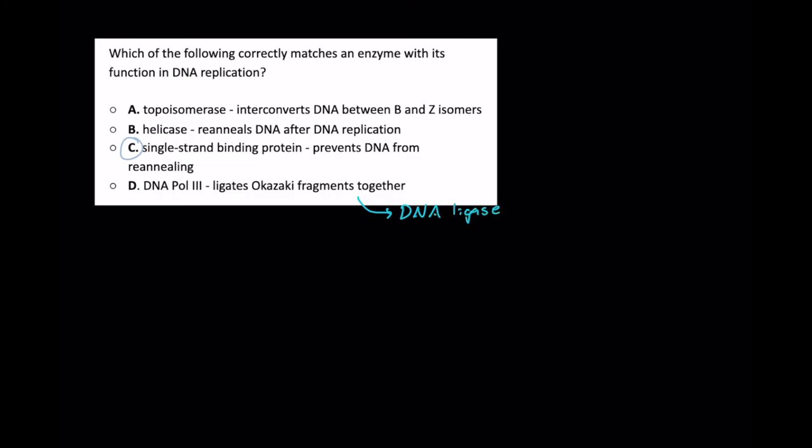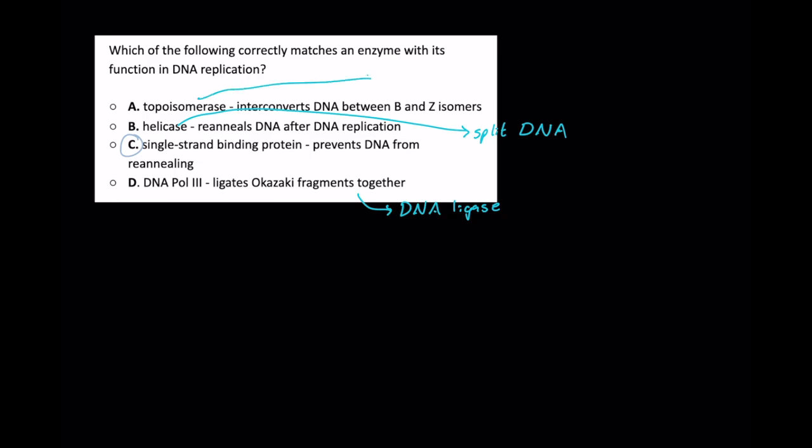Helicase in the same vein is not going to be what re-anneals DNA after DNA replication. It actually does the opposite. Helicase will split the DNA that we're about to copy. And finally topoisomerase will do a much different job than interconverting DNA between B and Z isomers, and so isomers really isn't the proper name for B and Z DNA which are two different shapes of DNA, B being the more common form. Topoisomerase on the other hand will relieve tension in DNA upstream of helicase due to supercoiling.